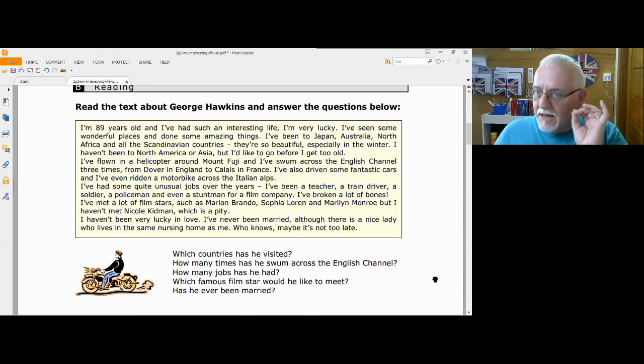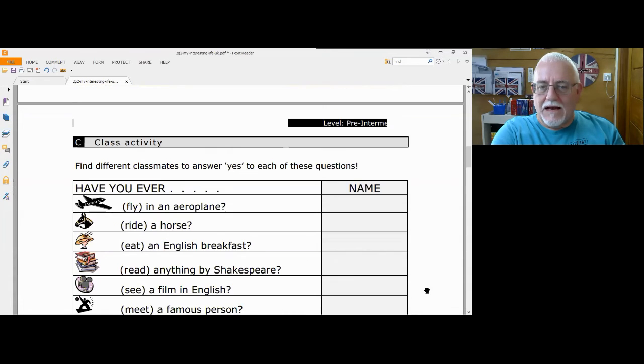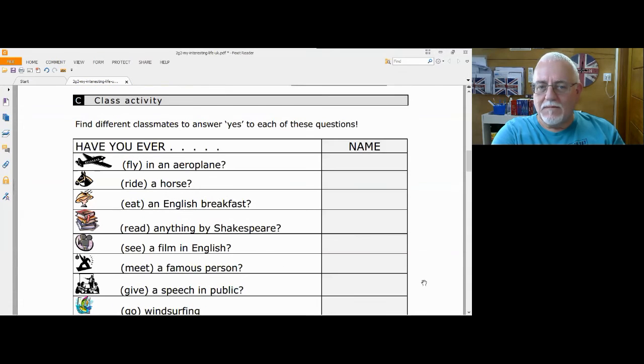Now, depending on how good your students are, you may want to let them read through the text again. And then maybe cover up the text, hide it, and just let them answer the questions from memory. If they are not too experienced, then it may be an idea to leave the text there and let them read through it to get the answers to the questions. So it really does depend on the level of your students and you as teachers should know the level that your students are at.